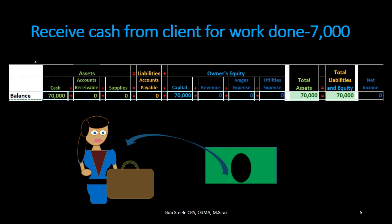Next transaction: we received cash from a client for work done — $7,000. Is cash affected? Yes — keyword is 'received,' therefore cash is increasing. If cash goes up we need to know what other account is affected. Why are people paying us cash? Because we did work. When we do work we earn revenue. Revenue is part of the equity section, and if assets are going up then equity must be going up and therefore revenue must be going up.